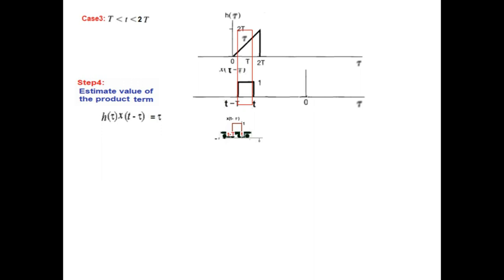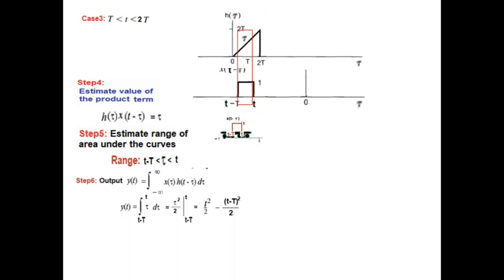For the range of integration: the lower limit is not immediately clear from one signal, but from the other it is clearly t minus capital T, and the upper end is t. So the range for tau is from t minus capital T to t. Integrating tau over these limits and solving gives the final value for case 3.